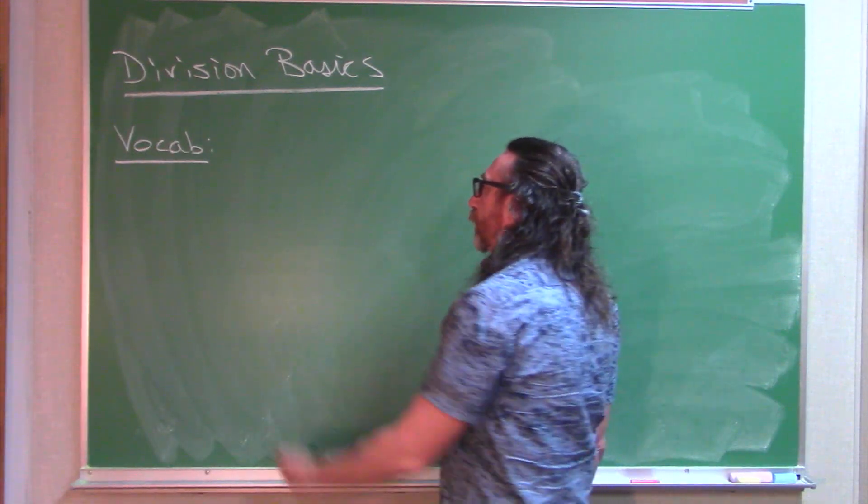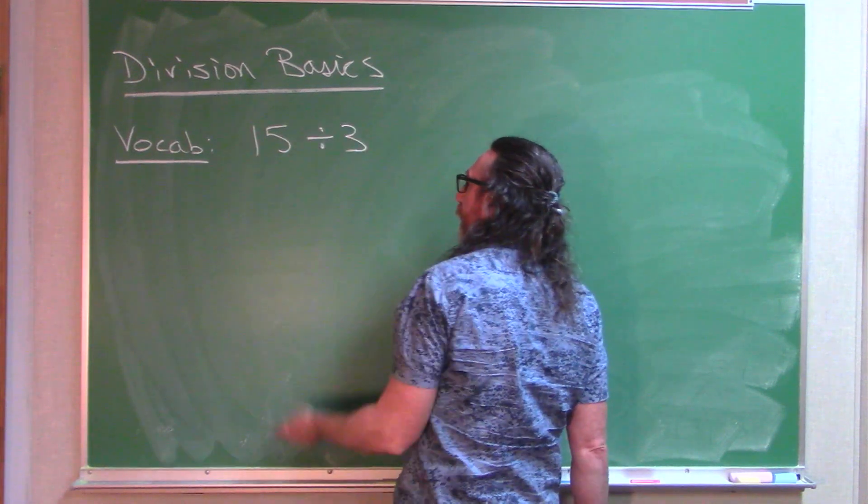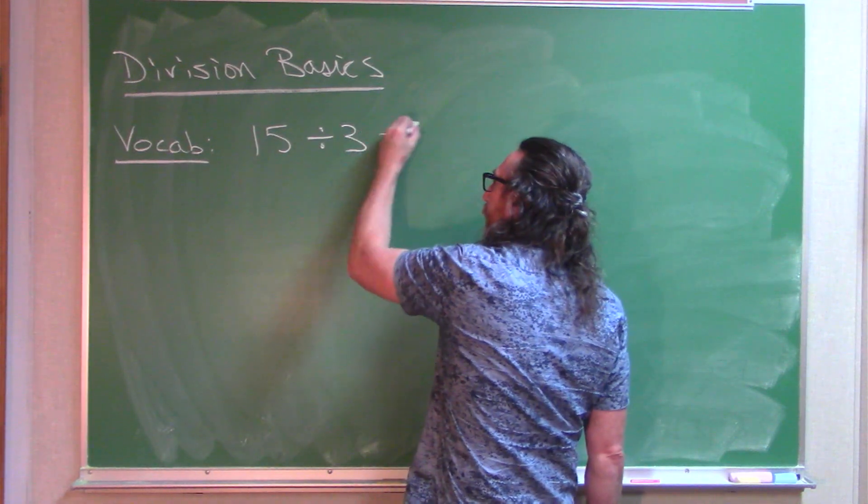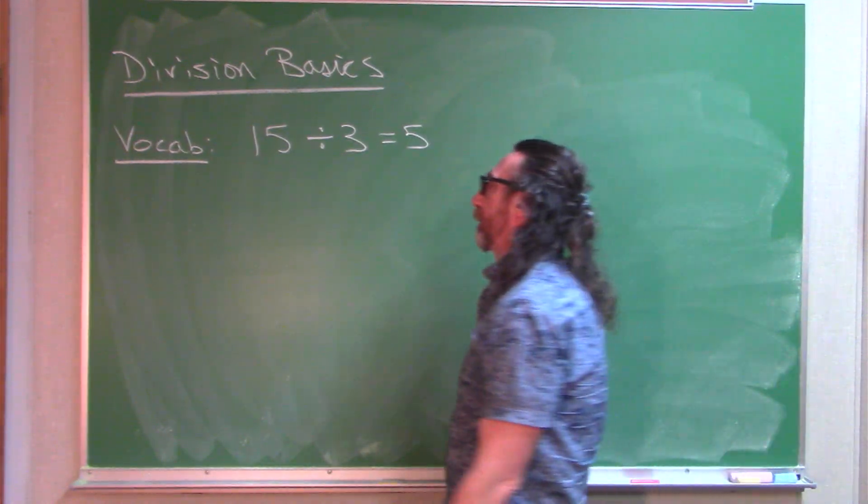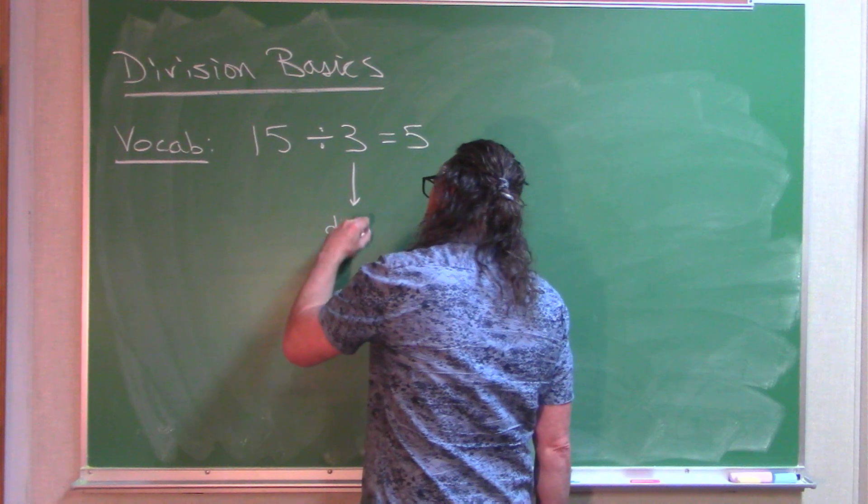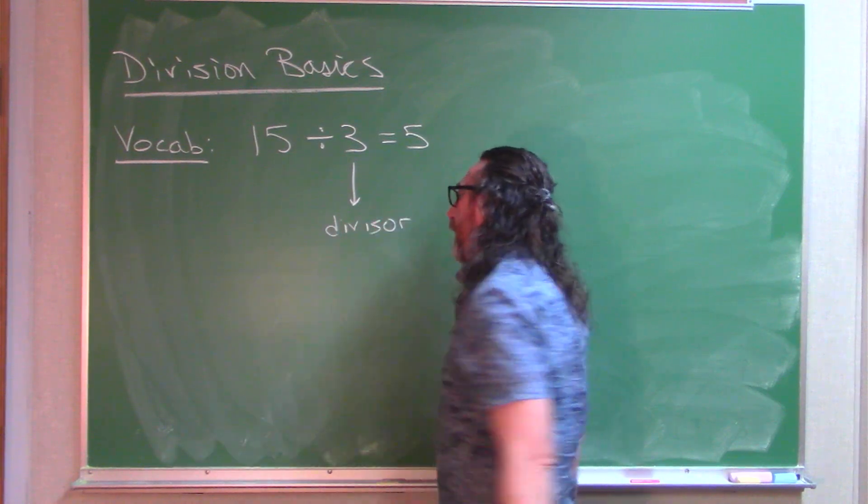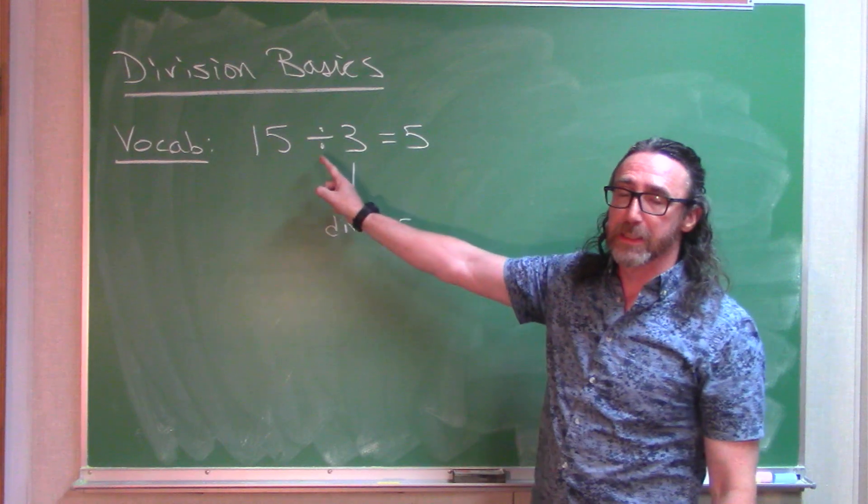If I was to do a problem like this, let's say 15 divided by 3. Now we know this is 5, we'll talk about ways to interpret it in just a minute. This number is called your divisor, 15 divided by 3. Of course, that's our division symbol.